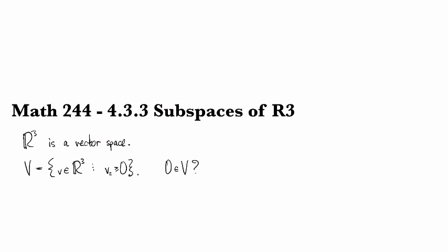First we check to see if 0 is in V, and we say yes. So if I look at the vector [0,0,0], the second coordinate definitely is non-negative. It satisfies that inequality, so we're good to go. What about if I take two vectors from there and add them together?